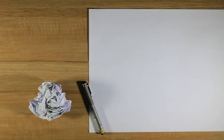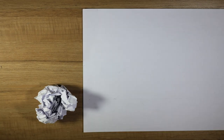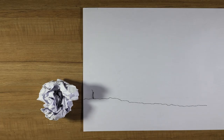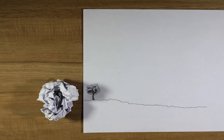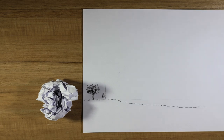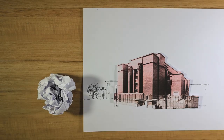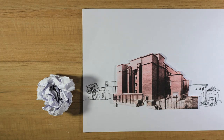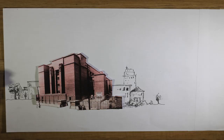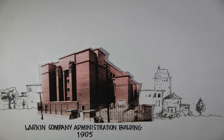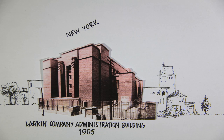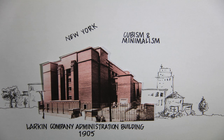Now let's take a look at his works. The concepts used in his works are purely based on our observations and personal opinions. The Larkin Company Administration Building in Buffalo, New York was built using the concepts of Cubism and Minimalism.